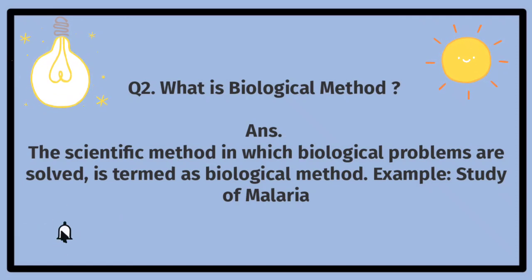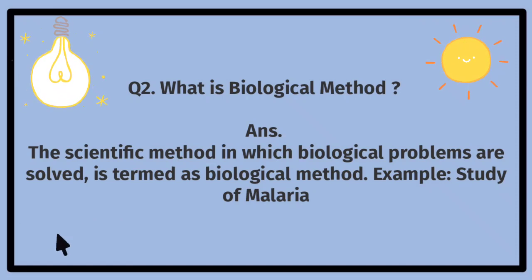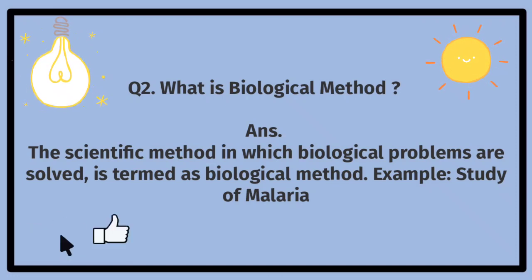What is biological method? The scientific method in which biological problems are solved is termed as biological method. Example: study of malaria. Hayatiyati tariqa kiya hai. Wo sainci tariqa jis mein hayatiyati masalah ko hal kiya jata hai, isay hayatiyati tariqa kaha jata hai. Misal: malaria ka mutalah.